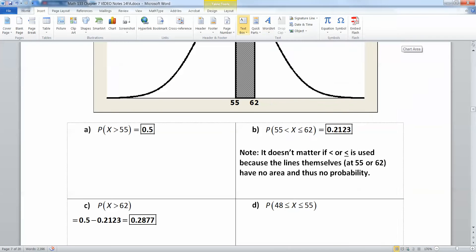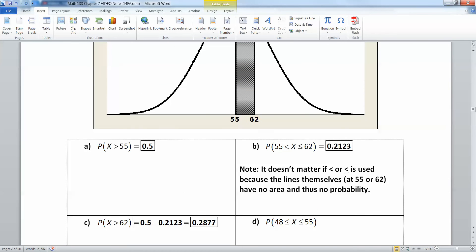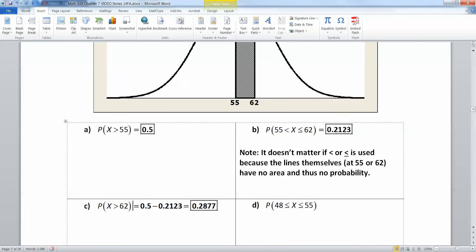There you have it. Just using a simple geometry argument, half the curve is 0.5, half the curve take away that gray shaded region is 0.2877.